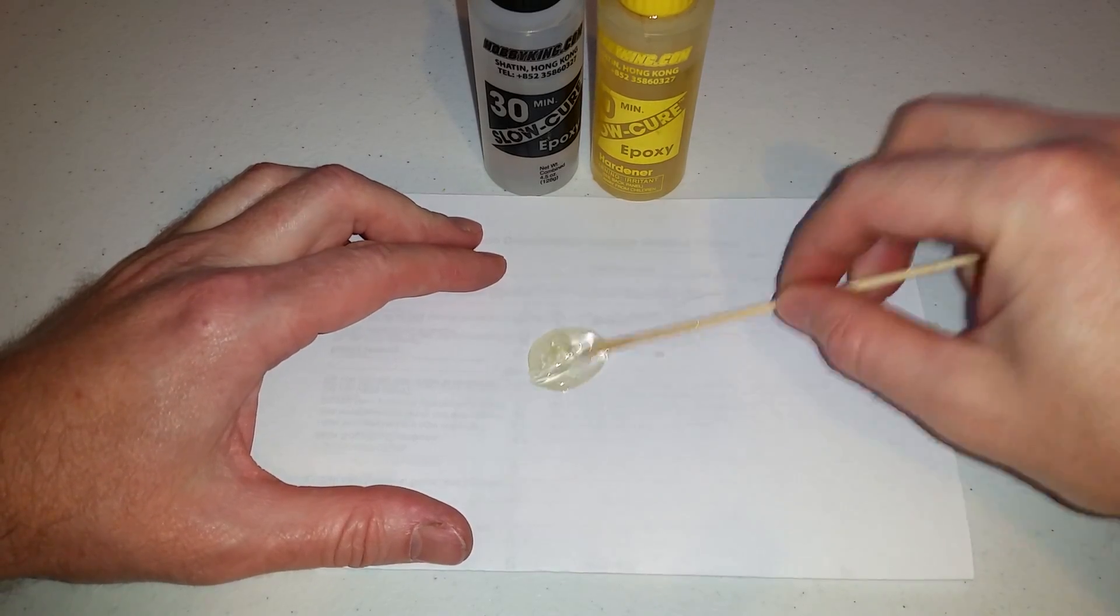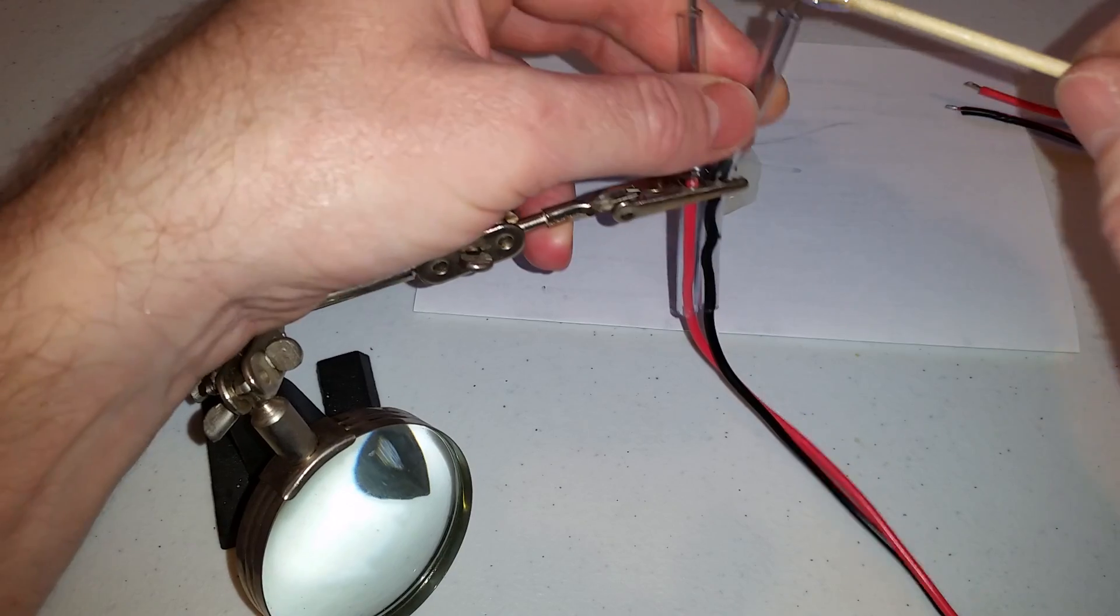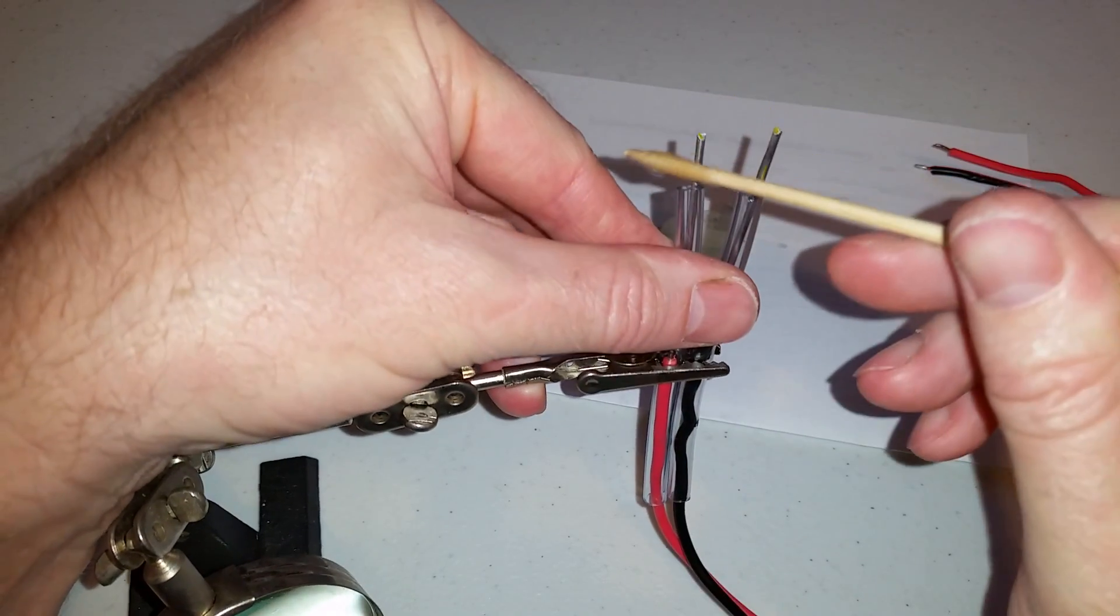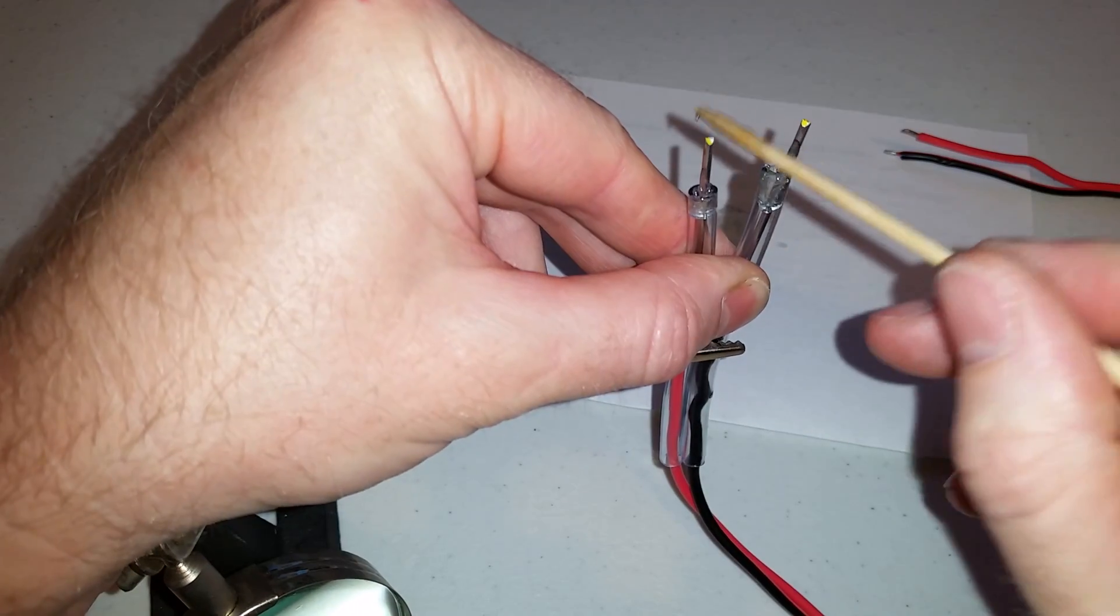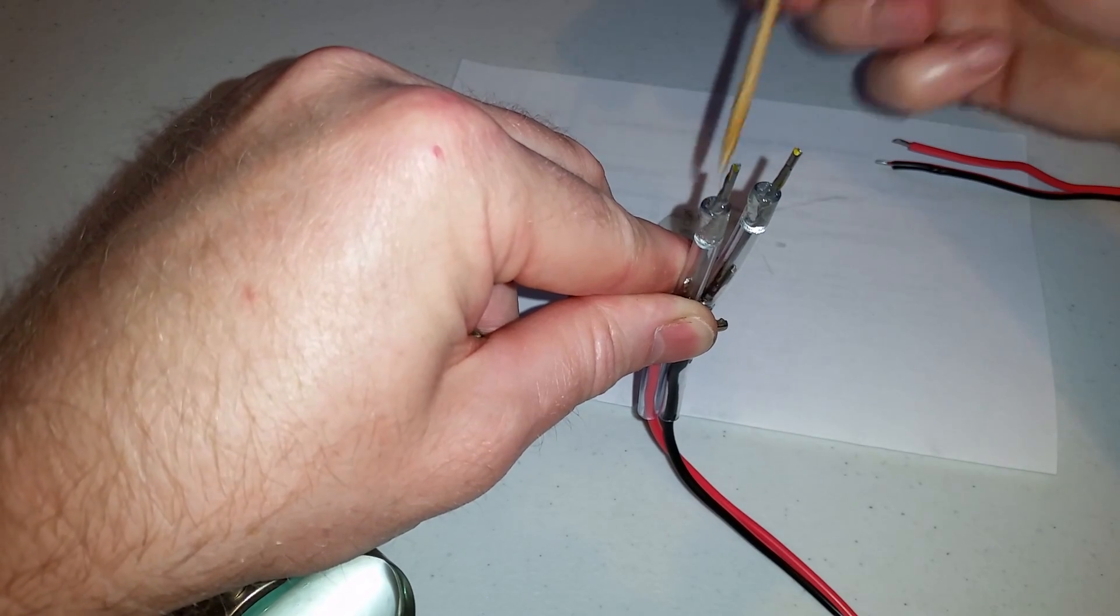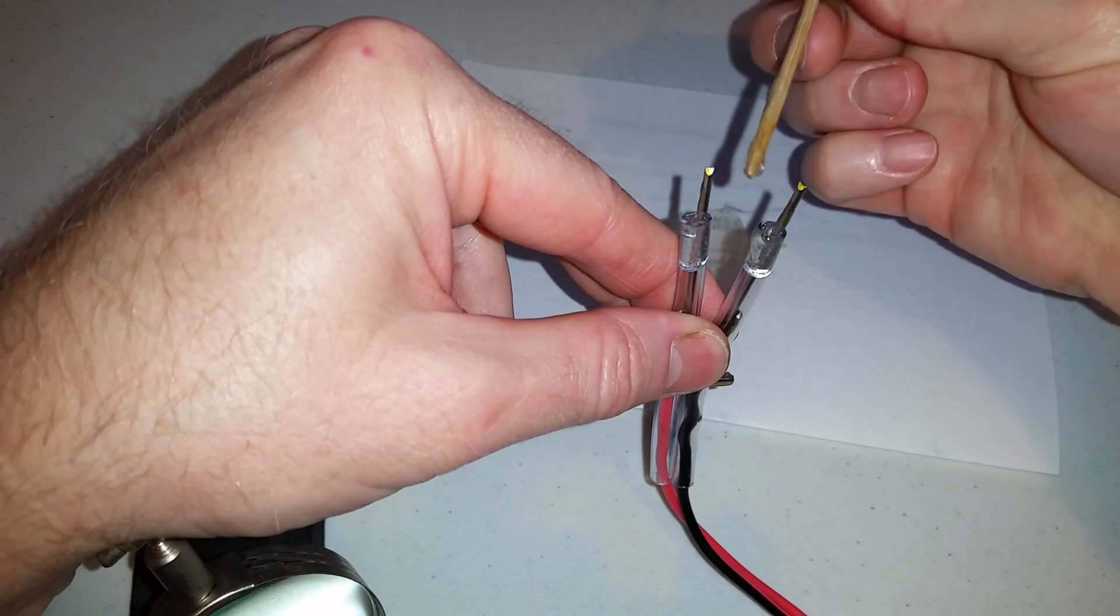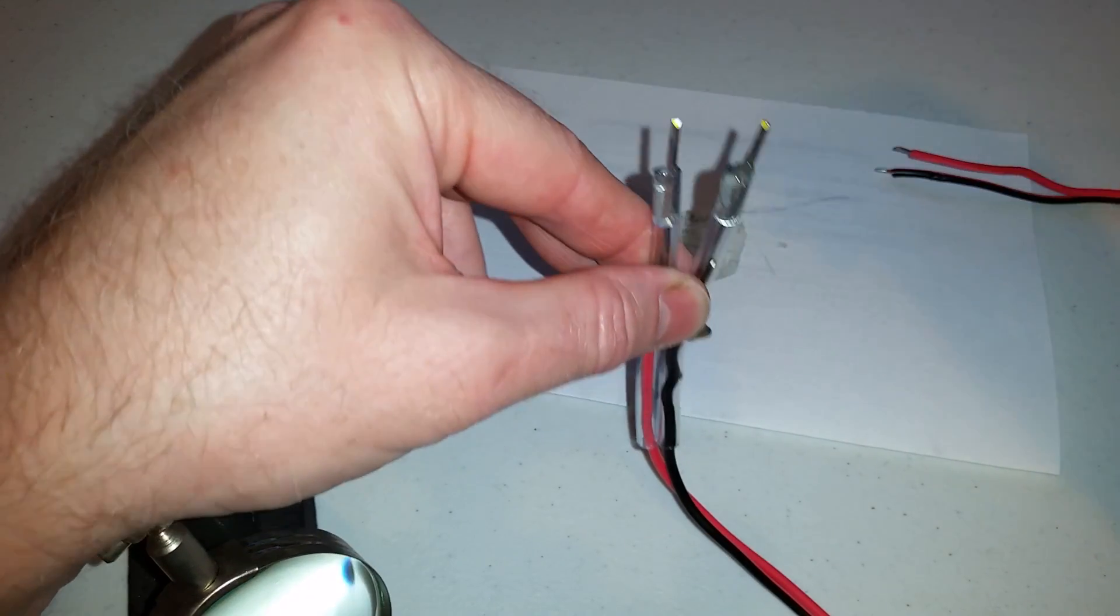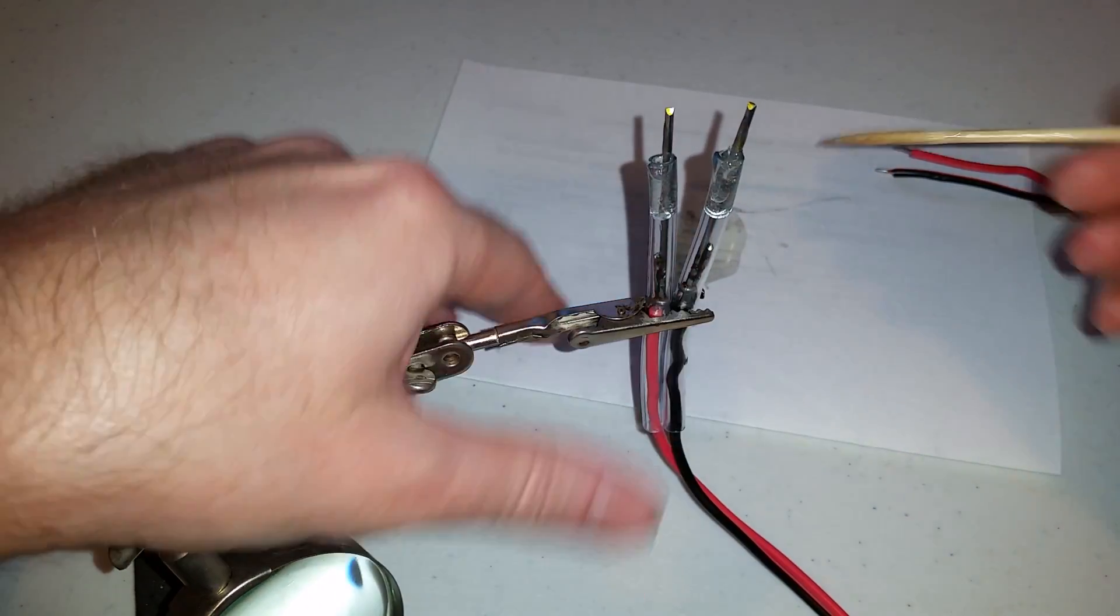Mix up your epoxy, take a bamboo skewer, scrape this into the tube. Continue to press the epoxy down into the tube. You have maybe about five to ten minutes to work with this 30-minute epoxy before it becomes too solid to really run down the tube.